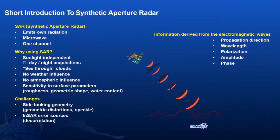Why are we using SAR? Multispectral sensors only provide images during daytime, but sometimes we need to capture images at night. SAR is sunlight-independent — day-and-night acquisitions are possible. Also, during flood events, multispectral data is often covered by clouds. SAR data can be utilized because it has no weather or atmospheric influence. Various surface parameters including roughness, geometric shape, and water content can be extracted from SAR data.